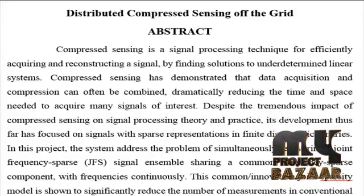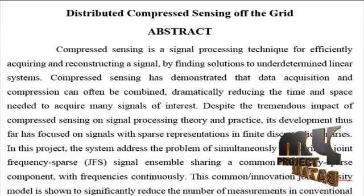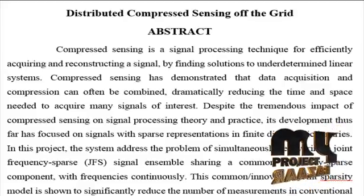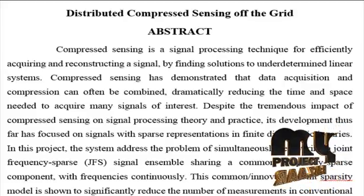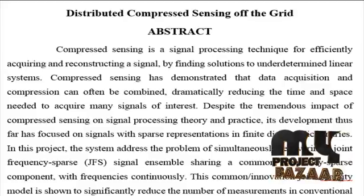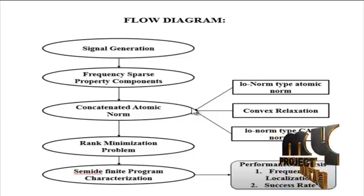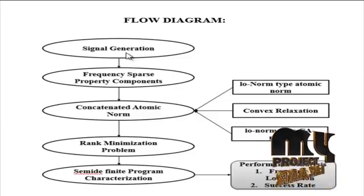The system characterizes a dual certificate for the optimality of the proposed optimization problem. Let's discuss the flow diagram for our process. Initially, the signal has been generated. The signal ensemble is denoted by the superscript Hermitian transpose.